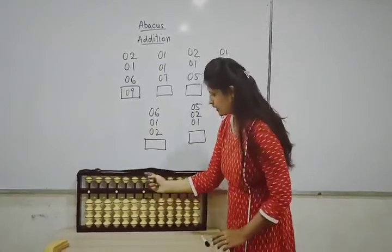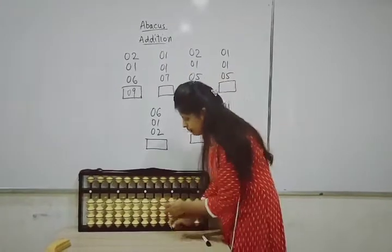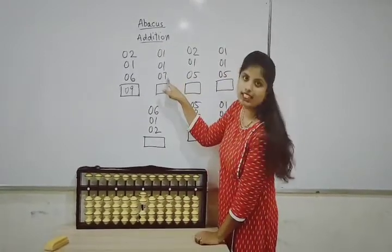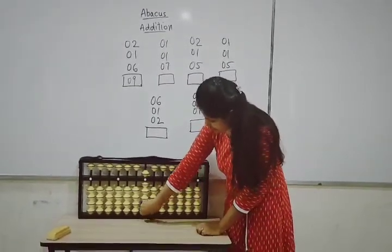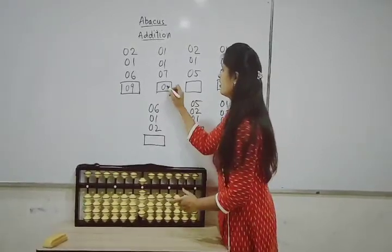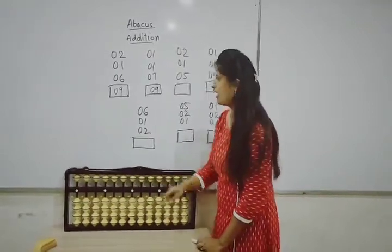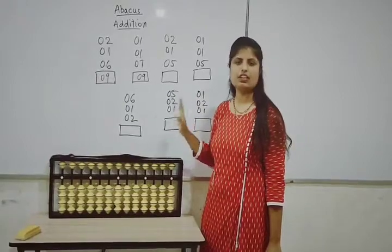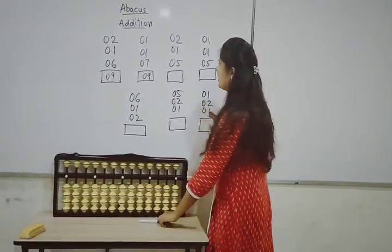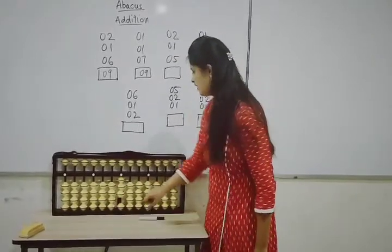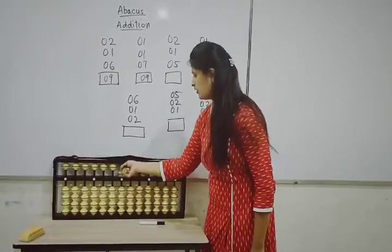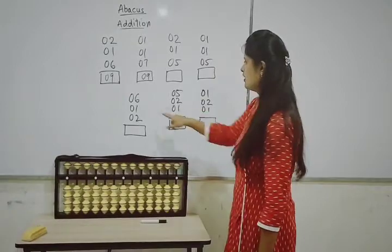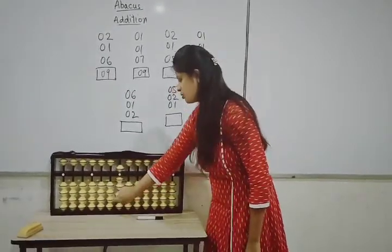Now the next sum: first number is 1, so 1 bit up. Second is also 1. Third number is 7: so 5, 6, 7 — the answer is 9. Again I am telling you: we have to find the answer as quickly as possible, in minimum time. Let's see — 2 plus 1 plus 5 equals 8. Now clear the apparatus: 1 plus 1 plus 5 equals 7. Now clear: 6 plus 1 plus 2 equals 9.